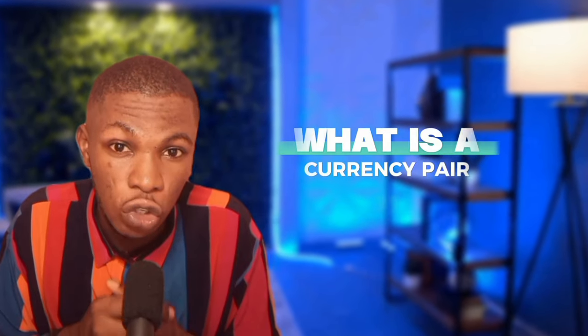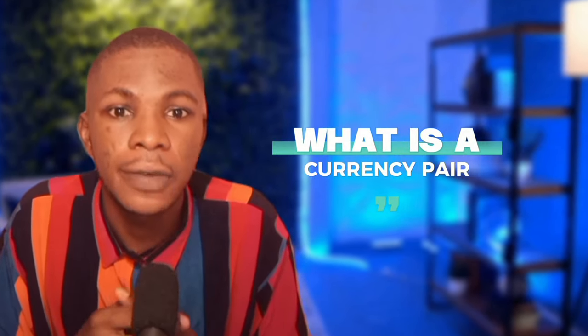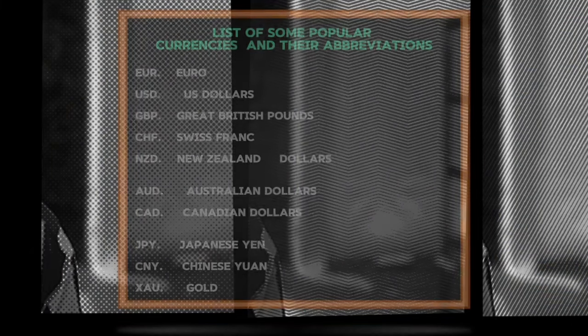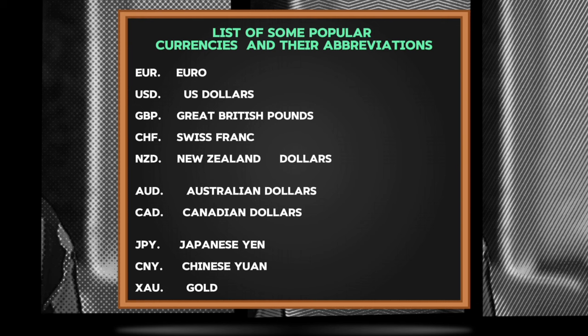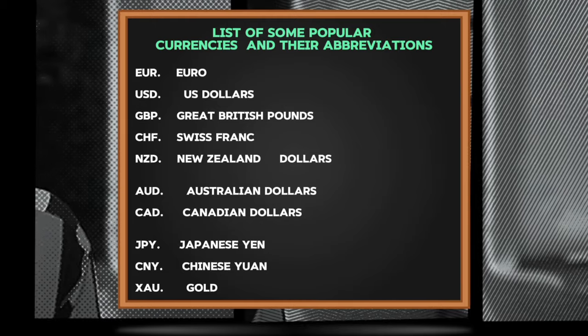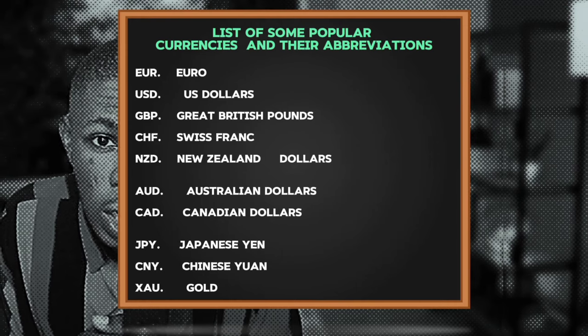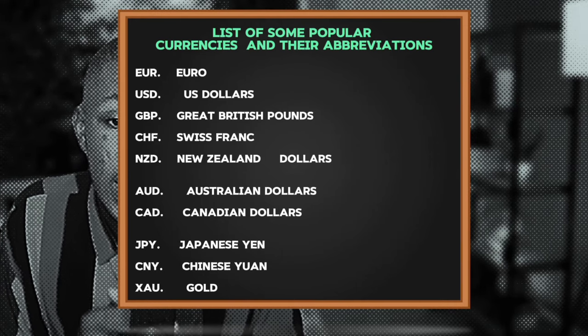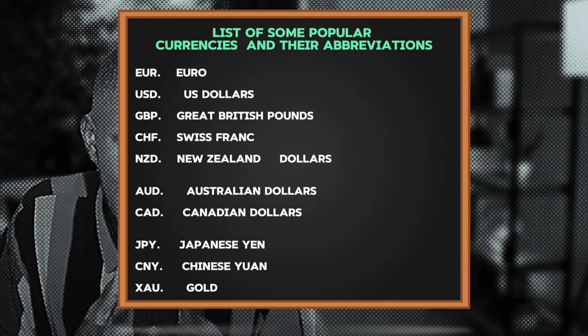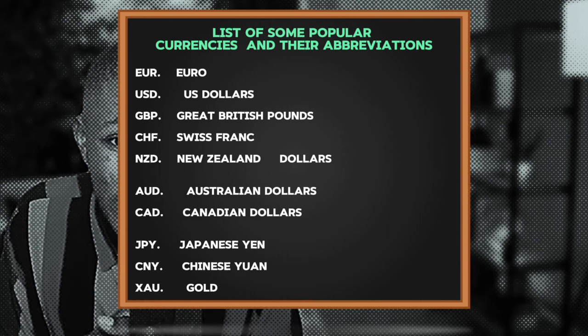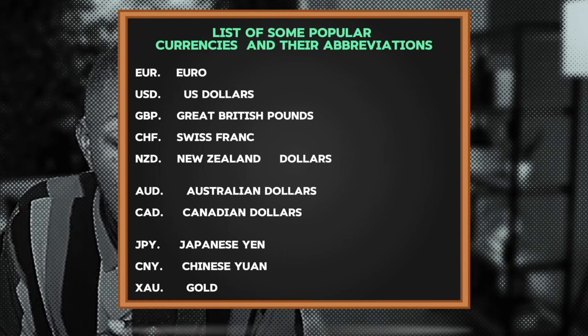Let's delve into everything you need to know about currency pairs. A currency pair is a price code of the exchange rate for two different currencies traded in the forex market. Here is a list of some popular currencies and their abbreviations: EUR stands for Euro, the official currency of many European countries; USD represents United States Dollars; GBP is the abbreviation for Great British Pounds, the currency of the United Kingdom; and CHF stands for Swiss Francs, the currency of Switzerland.